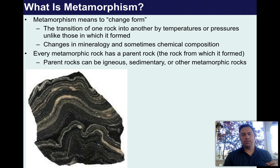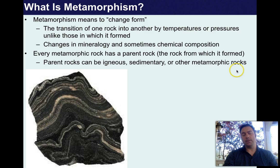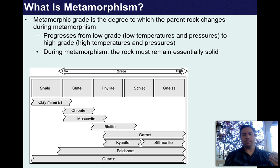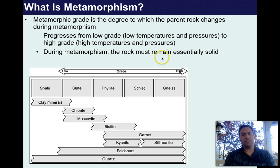Every metamorphic rock has a parent rock. Parent rocks can be igneous, sedimentary, or even other metamorphic rocks. Metamorphic grade is the degree to which the parent rock changes during metamorphism. It progresses from low-grade — low temperatures and pressures — to high-grade — high pressures and temperatures. During metamorphism, the rock must remain essentially solid. If you melt it, it's no longer a metamorphic rock — it becomes classified as an igneous rock.